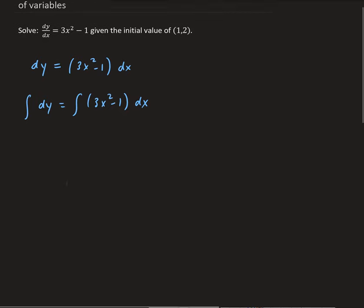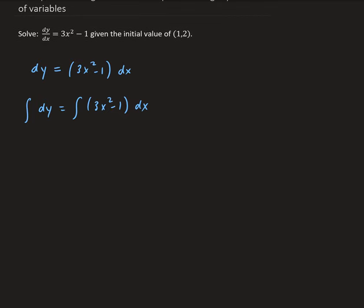So this is going to give us our general solution. The integral of dy is going to give us y, and the integral of 3x squared minus 1, we're going to get 3x cubed over 3, which gives us x cubed. The integral of 1 is going to give us x. So we're going to have x cubed minus x plus some constant. This is what's called the general solution.